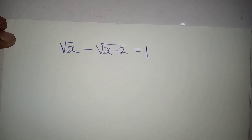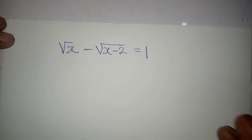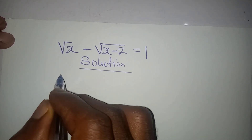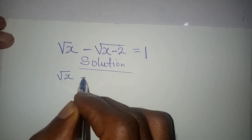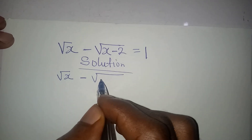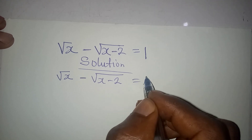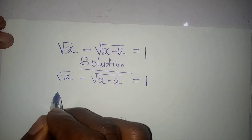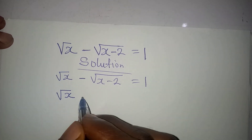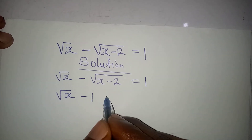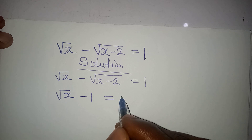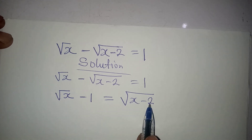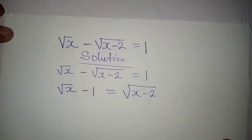Hello everyone, let's solve this problem very quickly. The equation is: square root of x minus square root of x minus 2 equals 1. The first step I'm going to take is to bring the square root of x minus 1 to one side, so it becomes negative on the left but positive on the right.